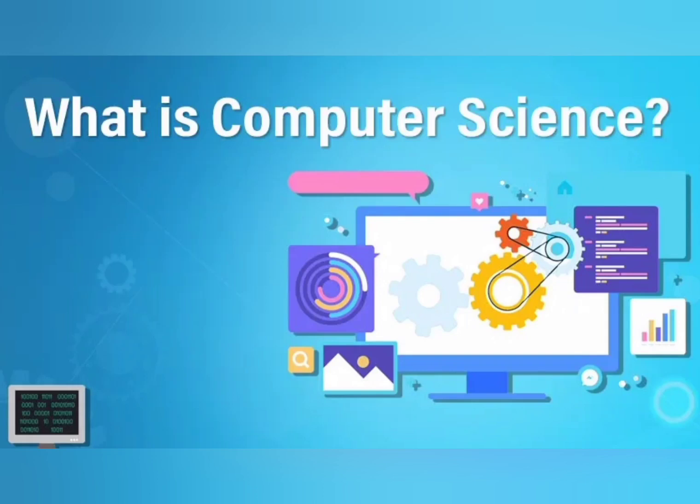Hello friends, good morning, good afternoon, good evening. This video is about comparing and getting information about computer science and its related specialization branches — AI, which is artificial intelligence, machine learning, and data sciences, as well as the core CSC branch. There are more specializations which will be covered in the next video.